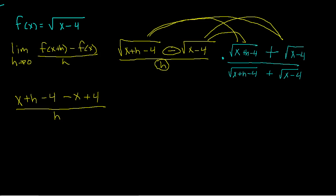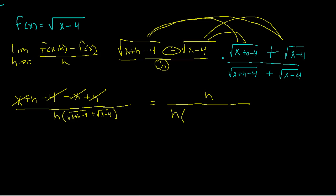Don't forget about the bottom. On the bottom, I have h times the square root of x plus h minus 4 plus the square root of x minus 4. Don't distribute that h — I want it left there so it can cancel. In the numerator, x and negative x cancel, and negative 4 plus 4 cancels to zero. All that's left is h divided by h times the square root of x plus h minus 4 plus the square root of x minus 4. Those h's are factors that finally cancel.